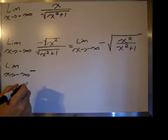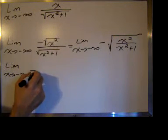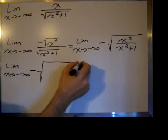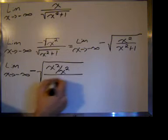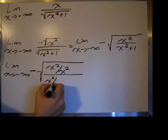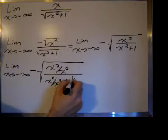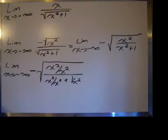But if I divide every term by the highest power of x, which is x squared now, inside the radical, I'm going to get x squared over x squared in the numerator, x squared over x squared plus one over x squared in the denominator.